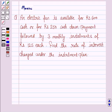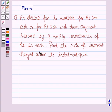Hello students, let's work out the following problem. An electric fan is available for Rs. 600 cash, or for Rs. 250 cash down payment followed by 3 monthly installments of Rs. 125 each. Find the rate of interest charged under the installment plan.